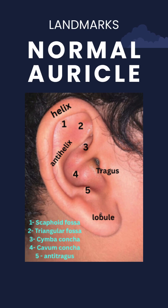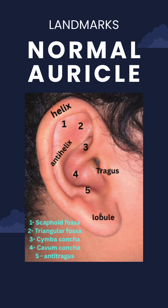ENT students should be thorough with the parts of the normal pinna. Given here are the landmarks of the normal auricle. The cymba conchae is one of the sites where you look for mastoid tenderness, and this is the most reliable site because it directly overlies the mastoid antrum.